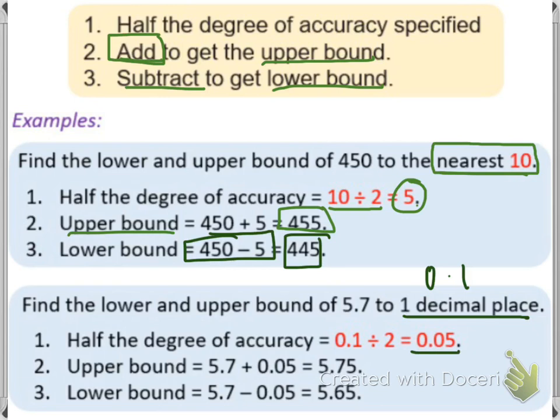In this question, we add and subtract 0.05. For the upper bound, we'll do 5.7 plus 0.05, which equals 5.75. And for the lower bound, it's 5.7 minus 0.05, which equals 5.65.